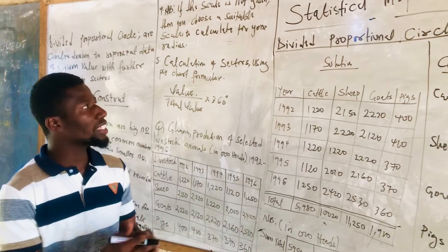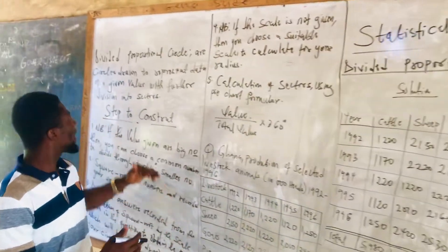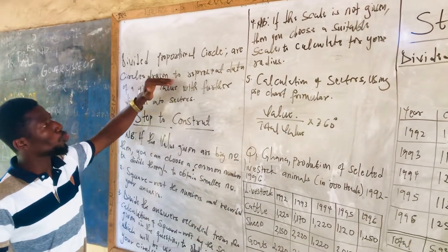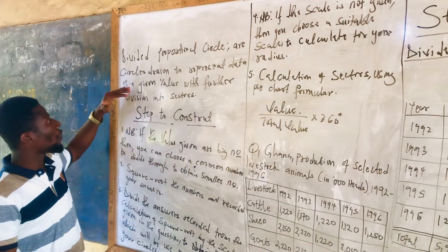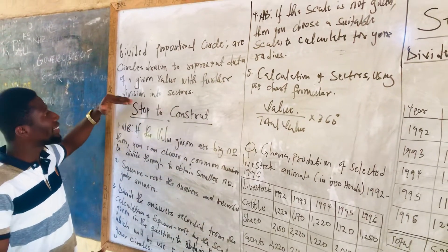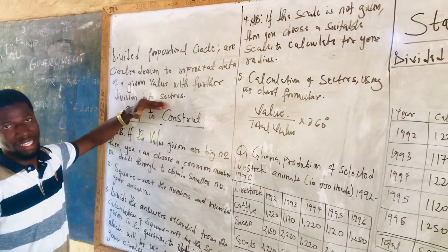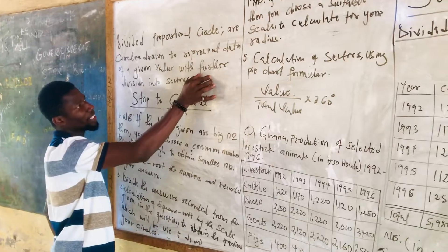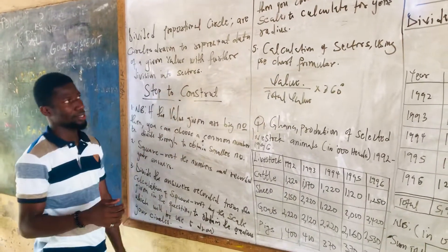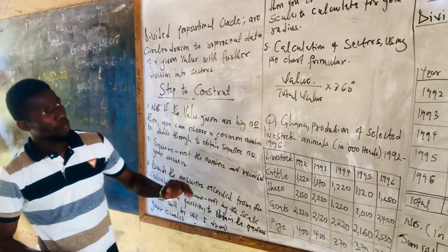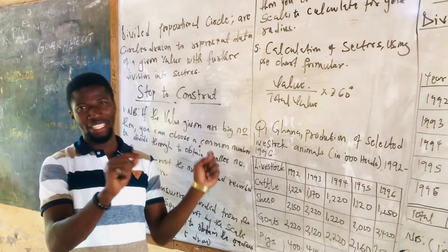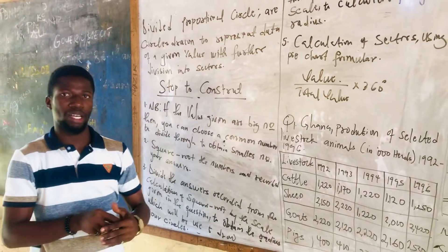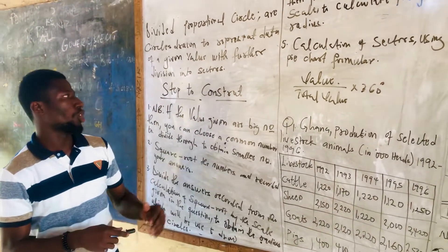Divided proportional circles are circles drawn to represent data of a given value with further division into sectors. The most important thing here is the division into sectors, because what differentiates the proportional circle from the divided circle is the sectors added to the proportional circle.